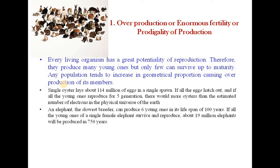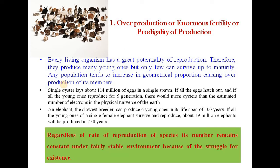An elephant, the slowest breeder, can produce 6 young ones in its lifespan of 100 years. If all the young ones of a single female elephant survive and reproduce, about 19 million elephants will be produced in about 750 years. Regardless of the rate of reproduction of a species, its number remains constant under a fairly stable environment because of the struggle for existence.